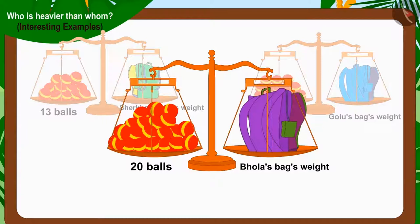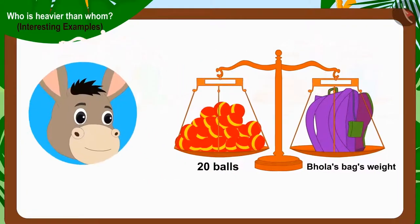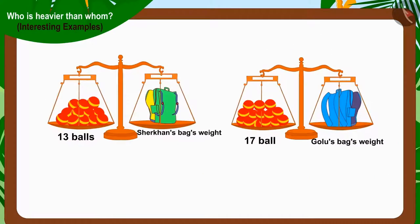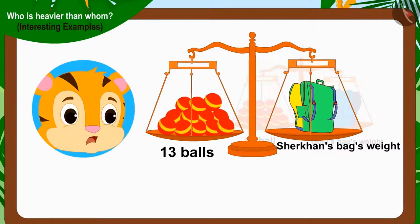Well done! Your answer is absolutely correct. Highest number of balls is twenty balls and is equal to the weight of Bhola's bag. That's why Bhola's bag is the heaviest. And whose bag is the lightest? Exactly! Shere Khan's bag is the lightest. Because the number of balls equal to the weight of his bag is thirteen, which is the smallest number.